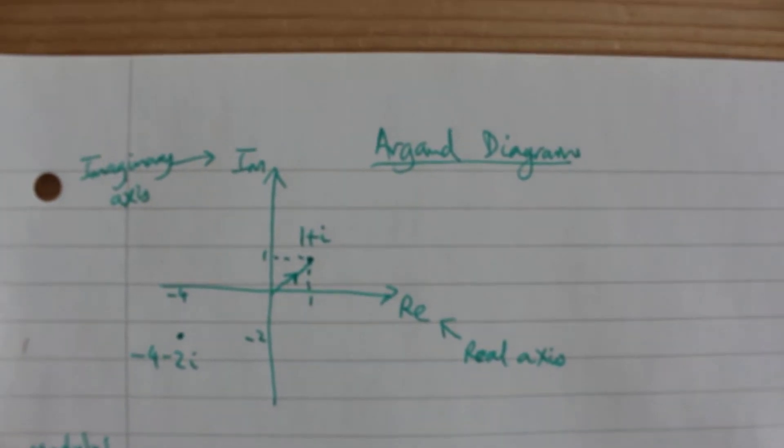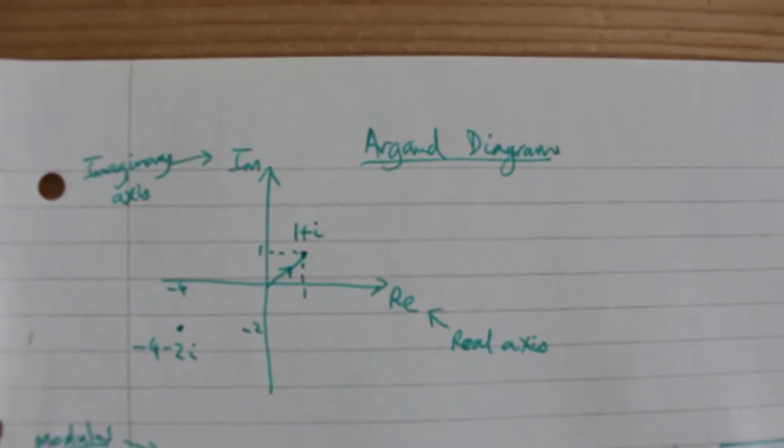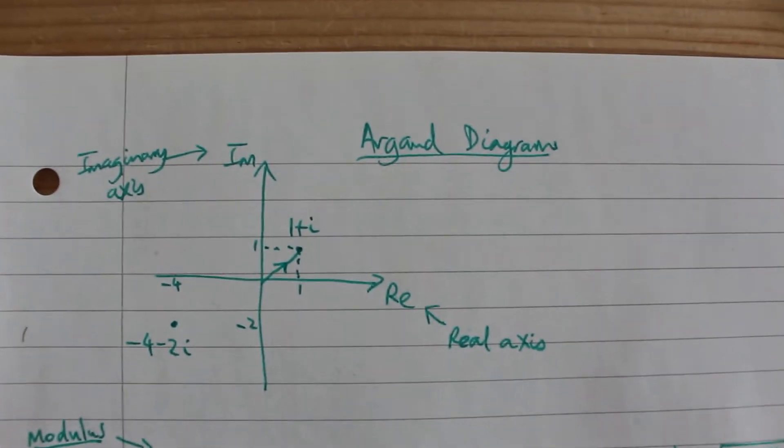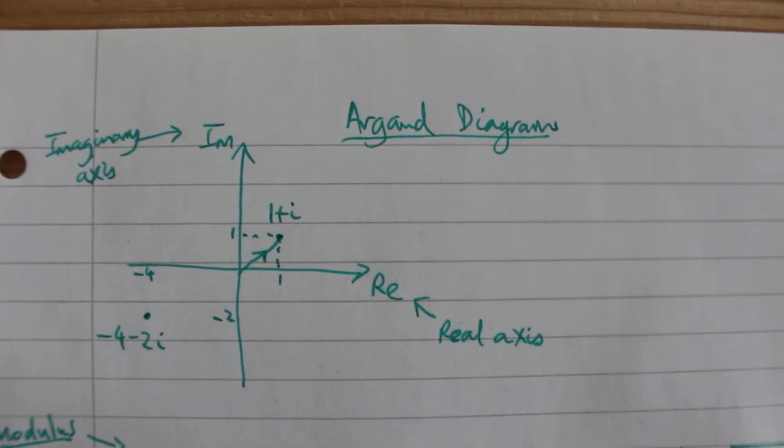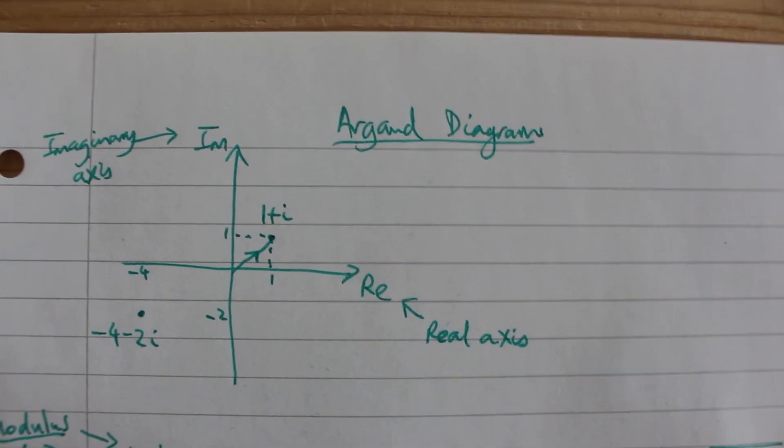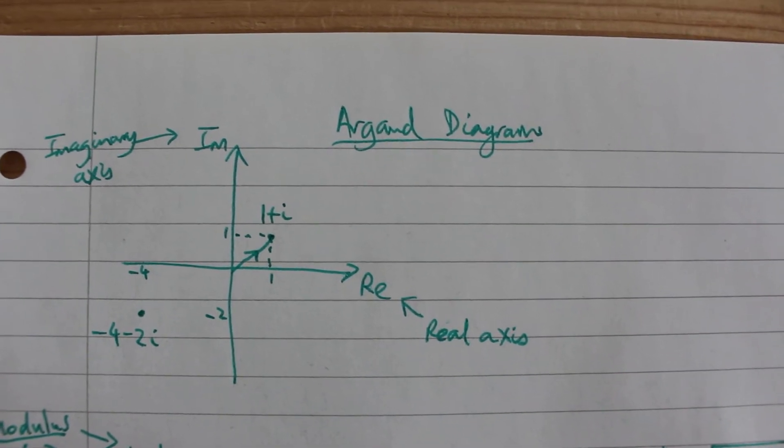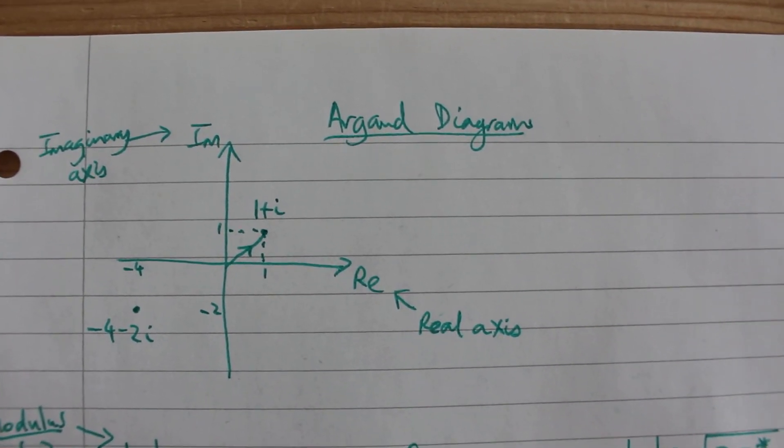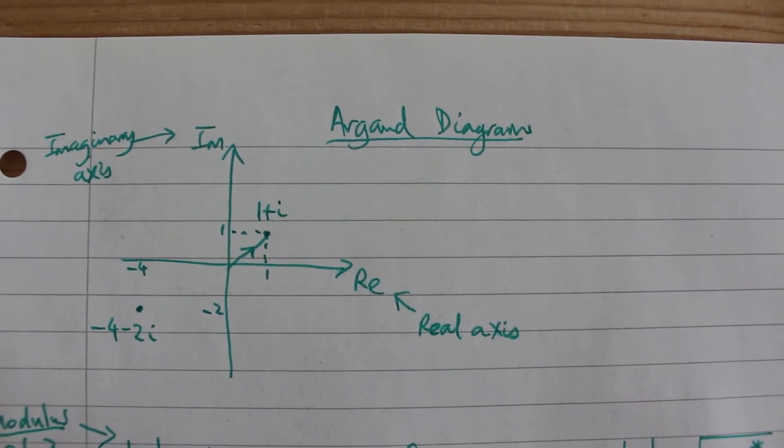So that's how to plot complex numbers on an Argand diagram and you're going to have a go at exploring what happens if you add or subtract or multiply complex numbers, what effect that has geometrically.